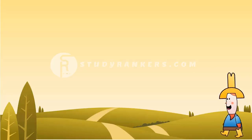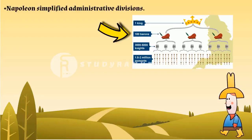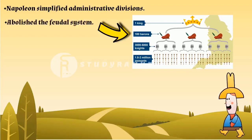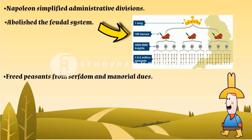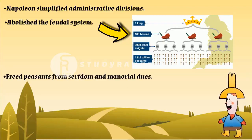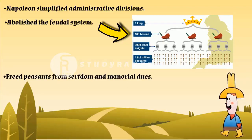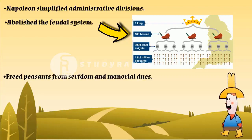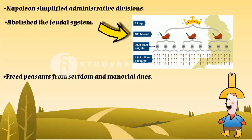In the Dutch Republic, Switzerland, Italy, and Germany, Napoleon simplified administrative divisions, abolished the feudal system, and freed peasants from serfdom and manorial dues. Serfdom means a peasant or worker had to provide services to their lords. They owned land but had to pay rent for it — that is called manorial dues. All these services and rents were removed. In the towns too, guild restrictions were removed.